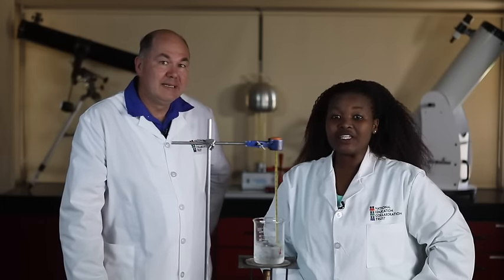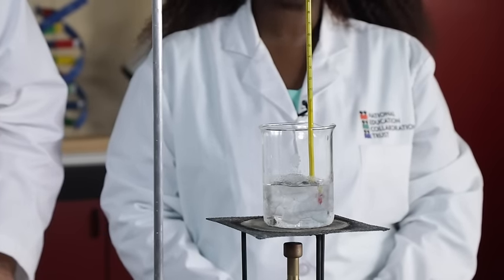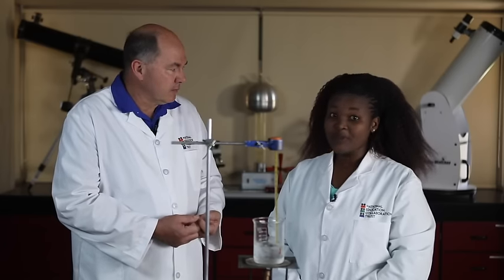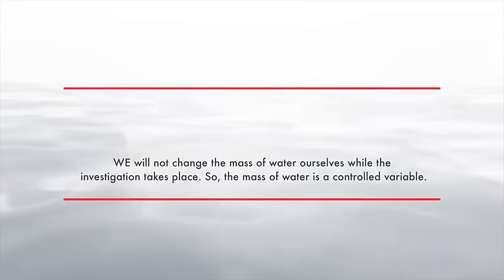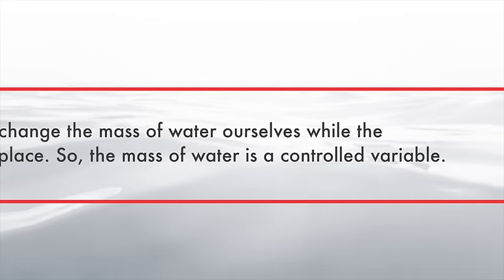For all of this to be true, we need to control a few other variables. The Bunsen burner flame must be adjusted to burn at a constant rate and left at that setting for the entire investigation — we must not readjust it at any stage. The rate of heating is therefore controlled. The mass of water must also remain constant; we start with a certain amount of ice and should not add or remove water during the investigation. There will be a slight loss in mass due to evaporation, but we will not change the mass ourselves, so the mass of water is a controlled variable.